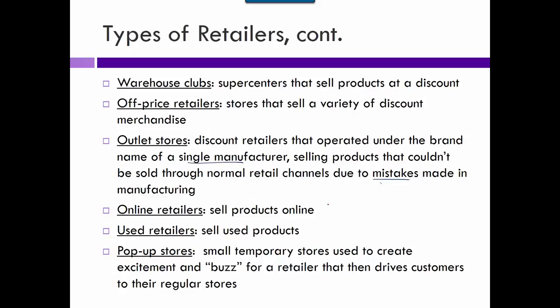Online retailers — some stores have both a brick-and-mortar store and an online presence, while others like Amazon are strictly online. Used retailers might be like Second & Charles used bookstore or thrift stores.